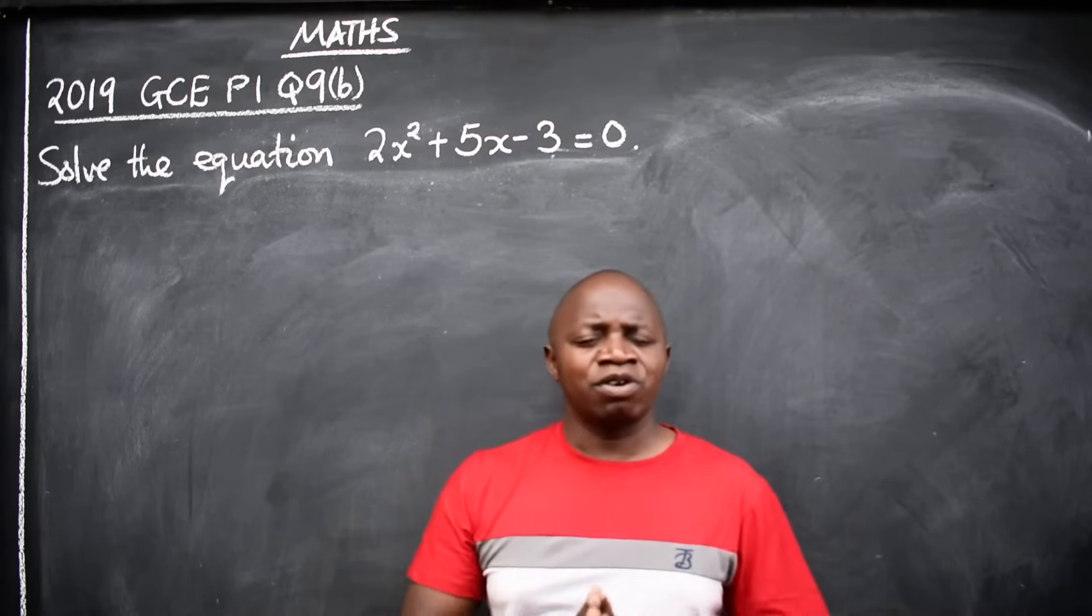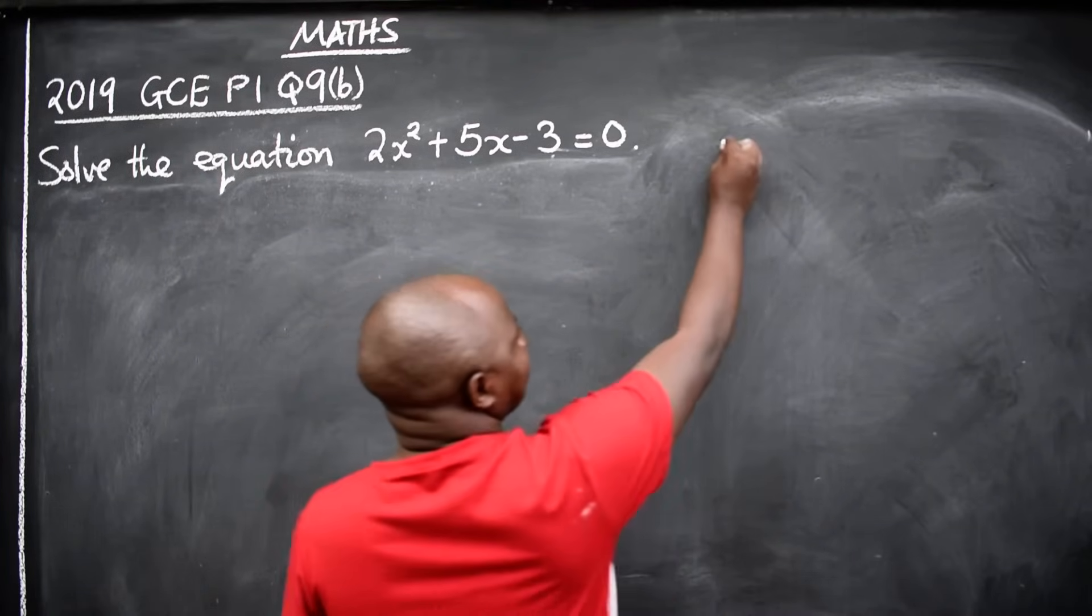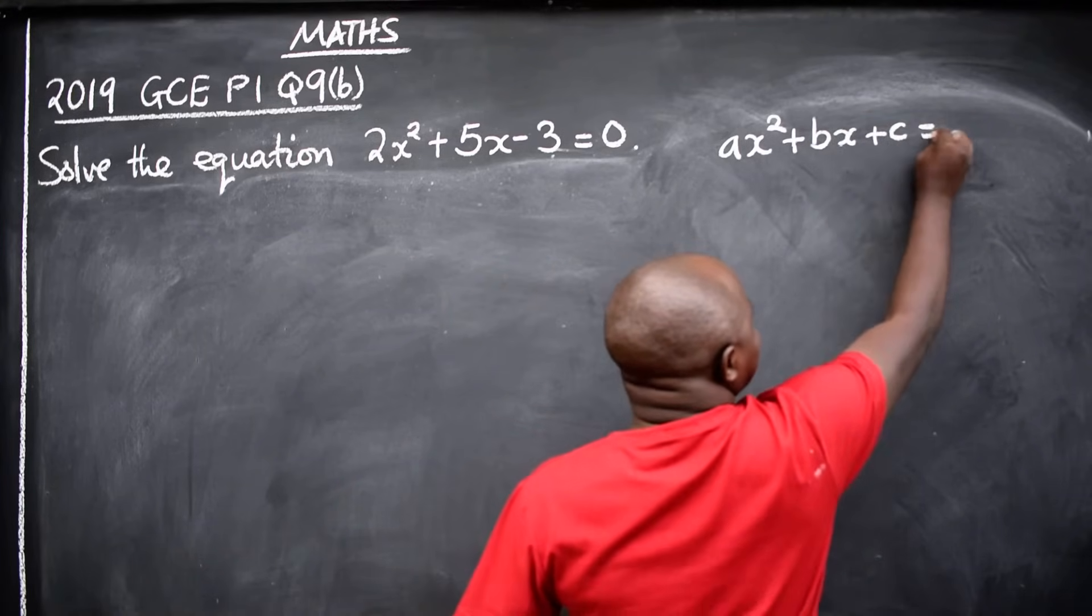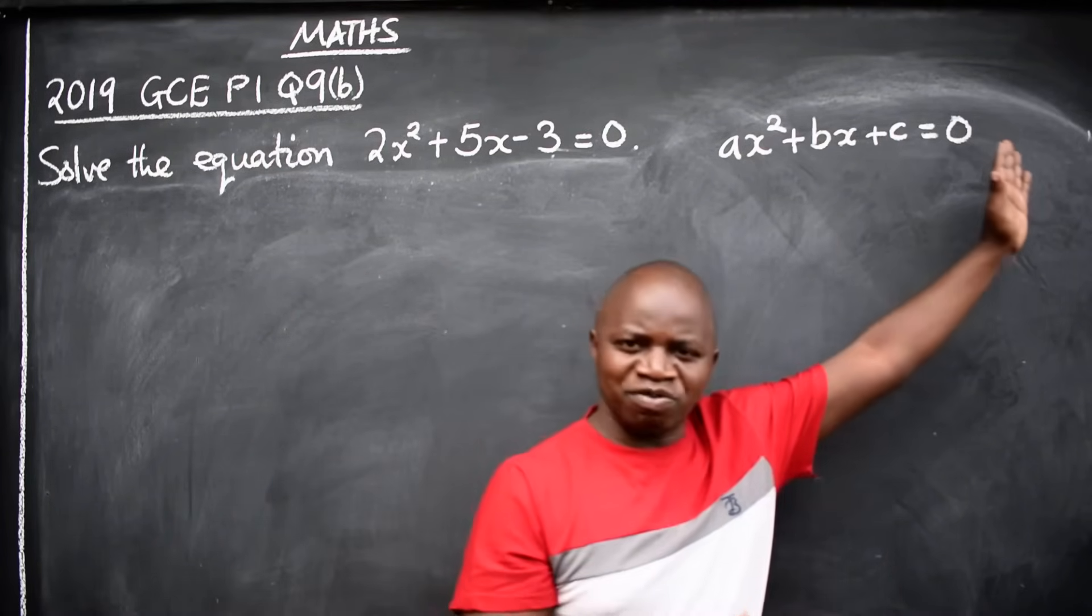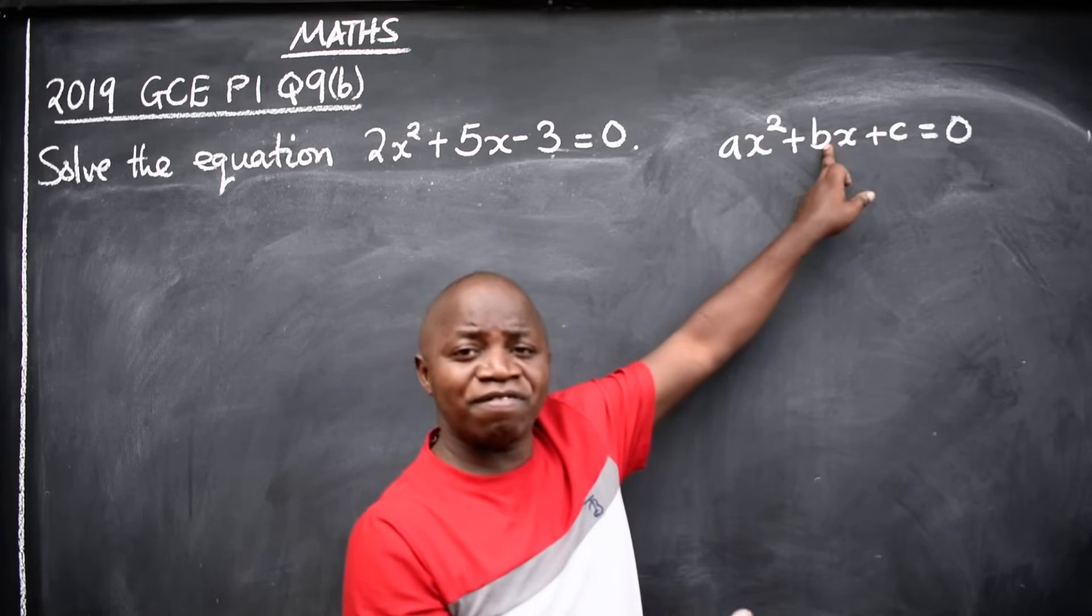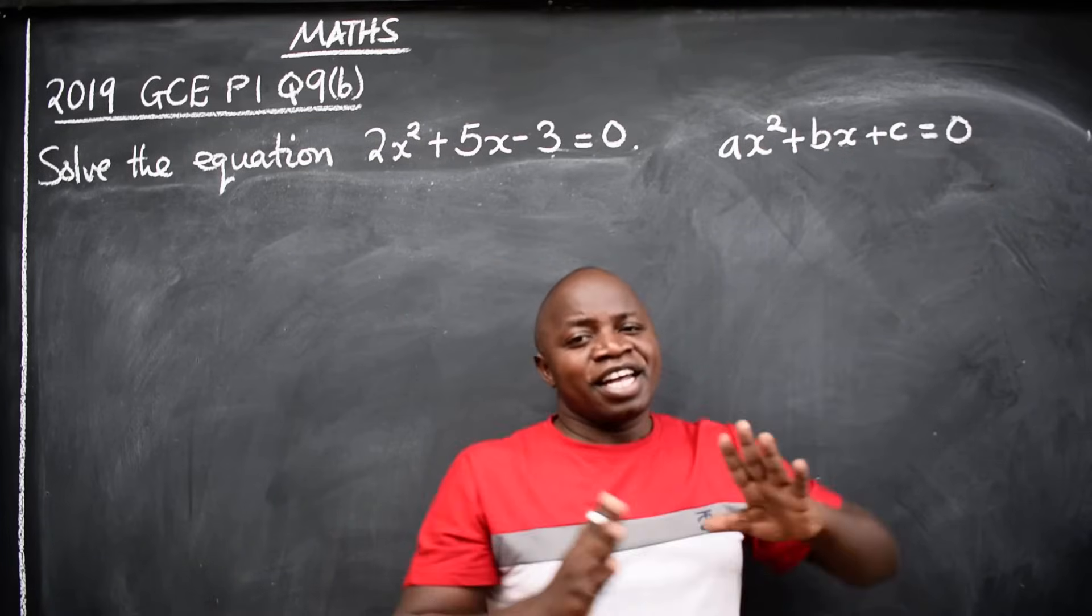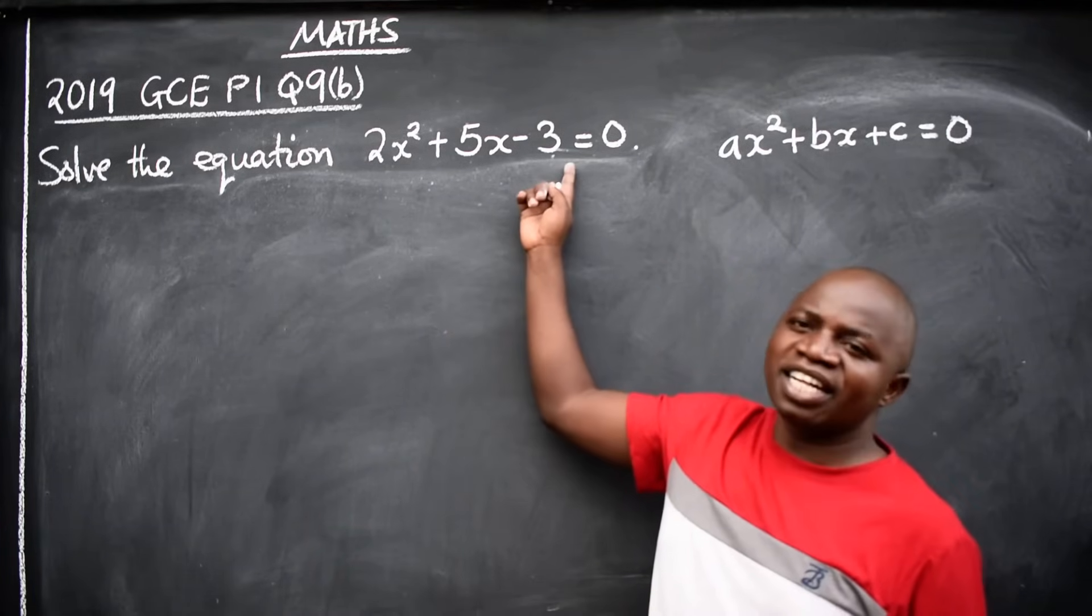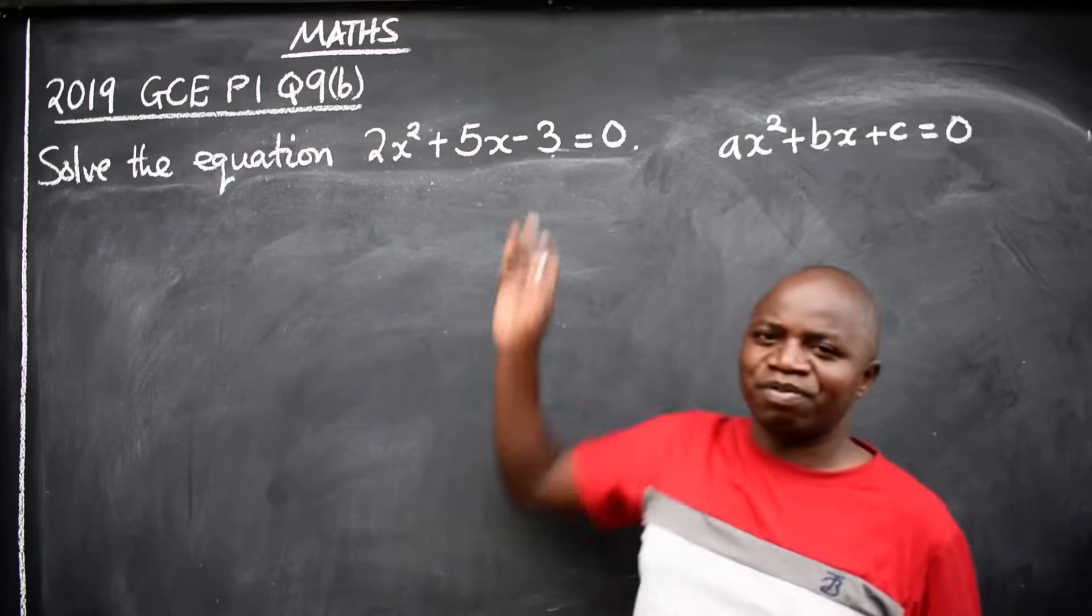The general formula or the general form of any quadratic equation should be in this format: ax² + bx + c = 0. So all quadratic equations must be in this form, where a is the coefficient of x², b is the coefficient of x, and c is the constant, equated to 0.